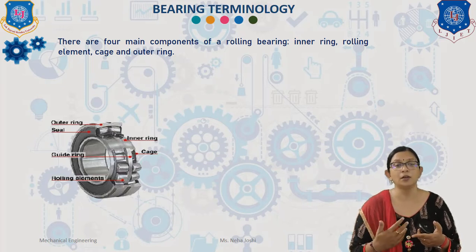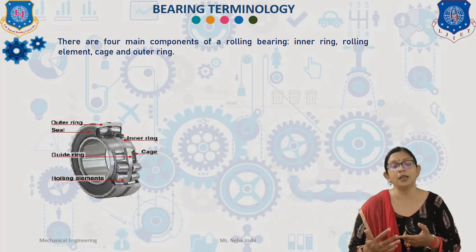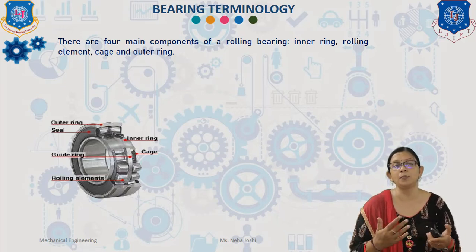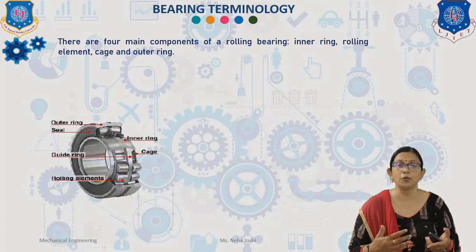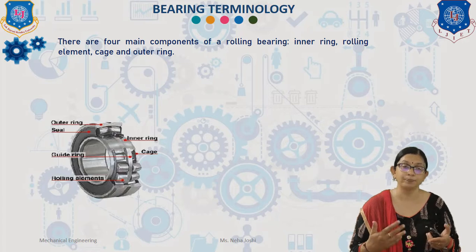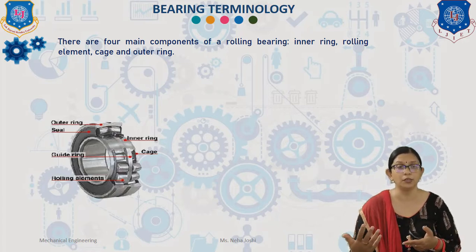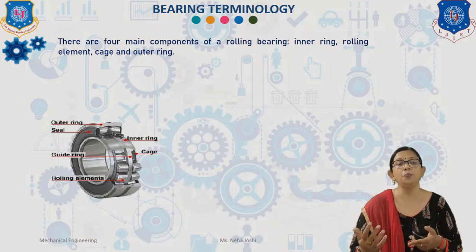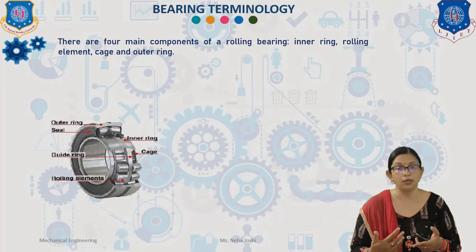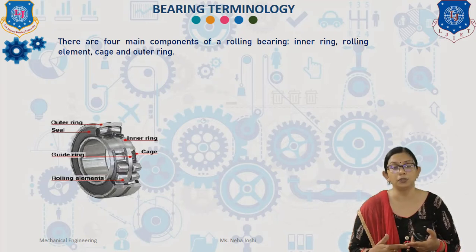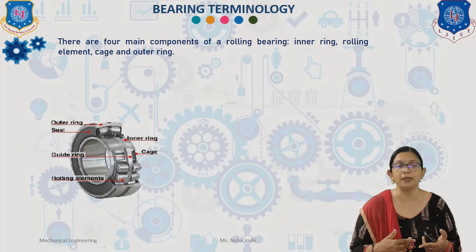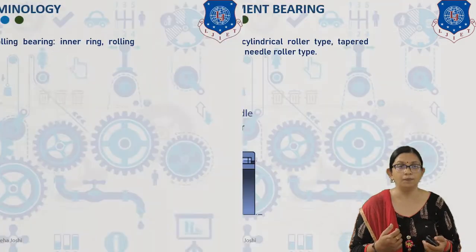The last component is the cage. The main purpose of the cage is to separate the balls or rollers, maintaining an even and consistent spacing to accurately guide the balls in the raceway during rotation and to prevent the balls from falling out. Cage may be of steel, brass, bronze, or phenolic composition depending upon the type and application of the bearing.